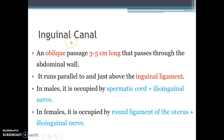The inguinal canal is an oblique passage measuring three to five centimeters passing through the abdominal wall. It runs parallel and above the inguinal ligament, which runs from the anterior superior iliac spine to the pubic tubercle and forms the floor of the inguinal canal.